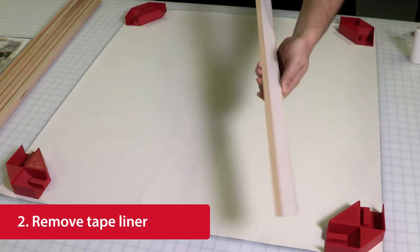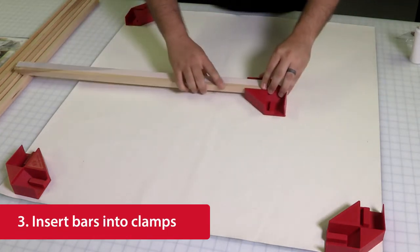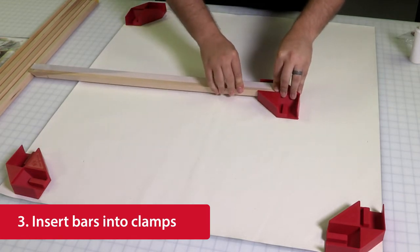Next, remove the liner from the tape on the bars and place the bars all the way up against the edge of the corner clamps and press down firmly.